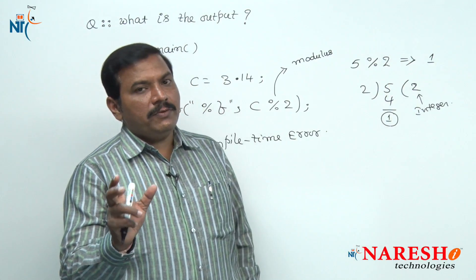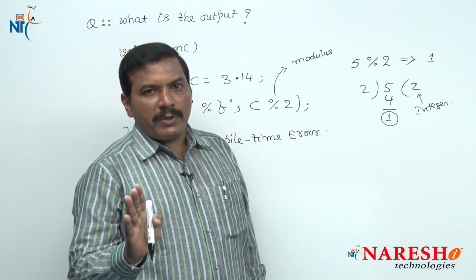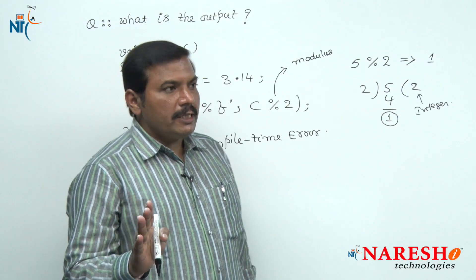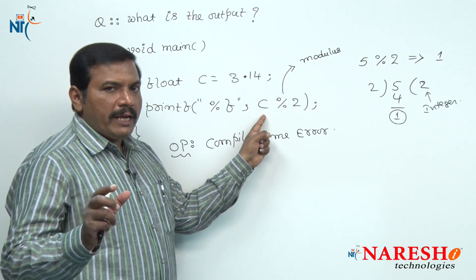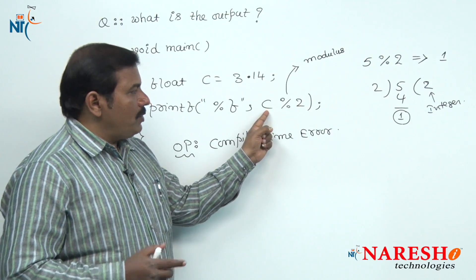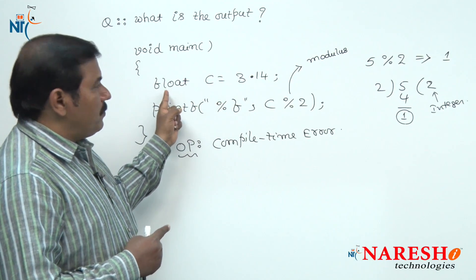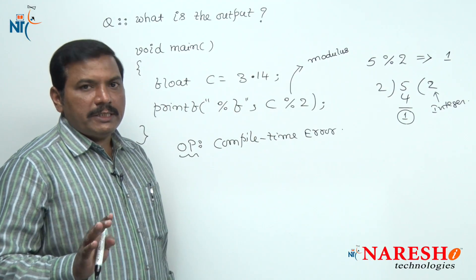With respect to performing integer division, both operands should be integer type operands. That is the reason we cannot use float operands for this modulus operator. As one of the operands here is C, whose type is float, hence the compiler displays an error message.